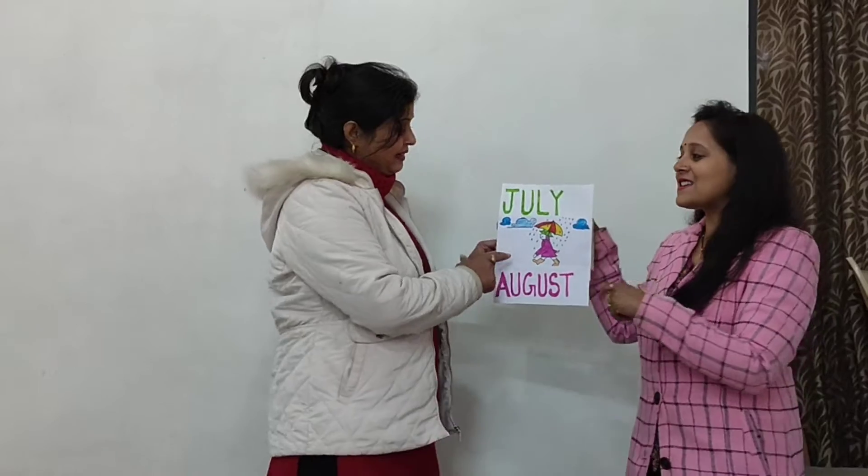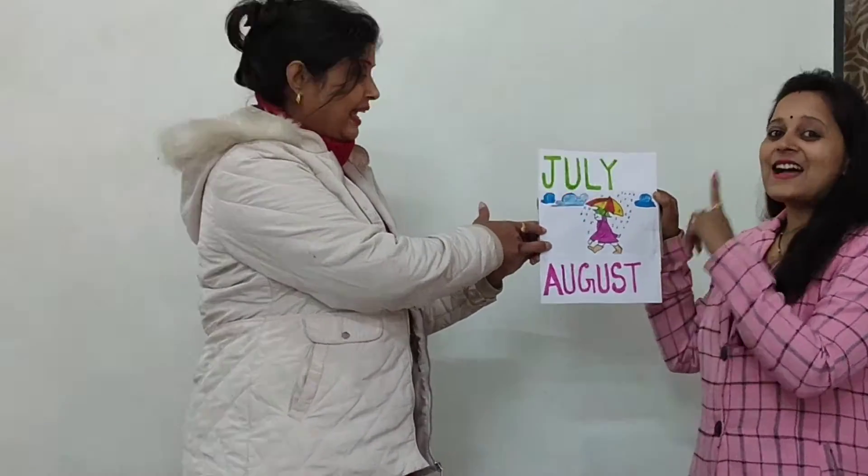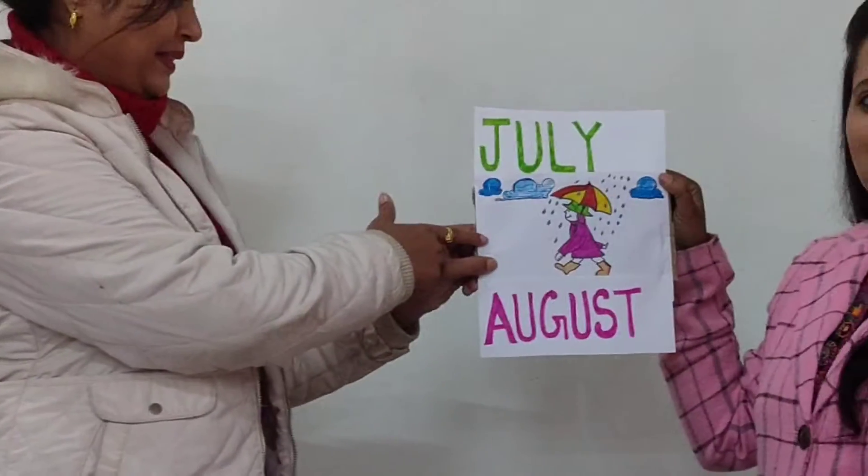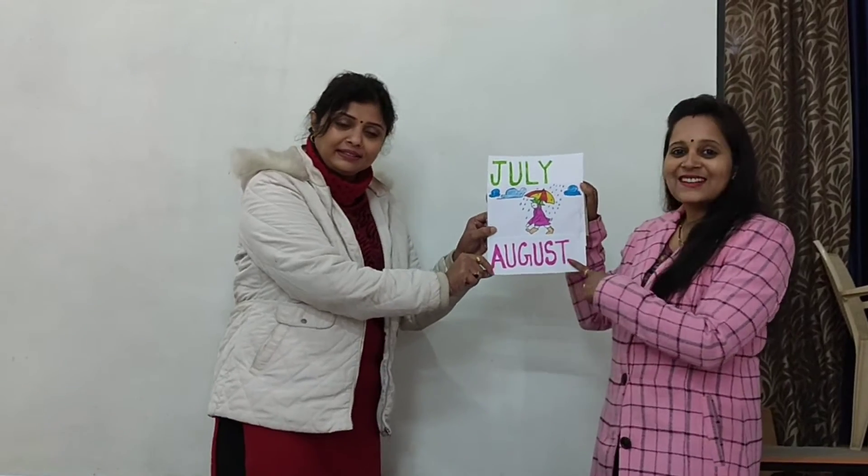Now children, tell me the season when peacocks are dancing — chai chapa chai! And also we need umbrellas. Which season is this? Rainy season. And the month is July and August.